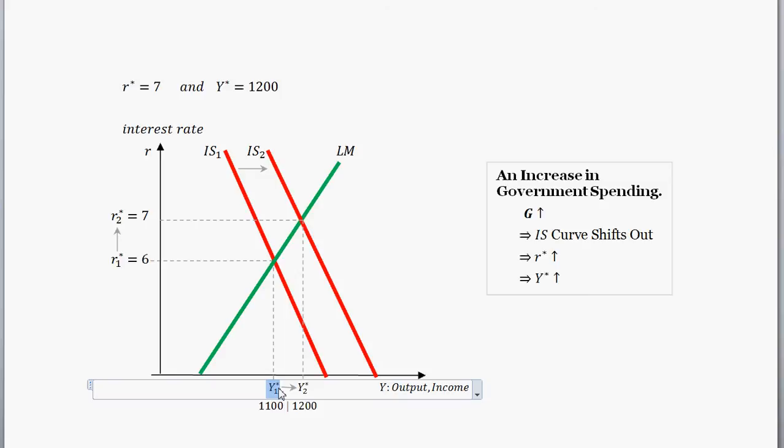Okay, so think to the market for real money balances that determines the LM curve. If Y is up, then the demand for money is up. However, the money supply and prices are both fixed in the LM market. So this means that interest rates must increase to equilibrate the money market. So given that increase in government purchases, we've just walked through why r has increased, interest rates have increased.